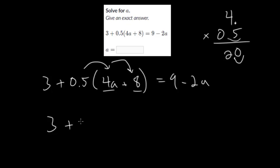So you get 3 plus 2a, and then 0.5 times 8. You do 8 times 5, which is 40, and then move the decimal once, so you get 4. This is equal to 9 minus 2a. And we're going to combine like terms. So 3 and 4 make 7. So you get 2a plus 7 is 9 minus 2a.